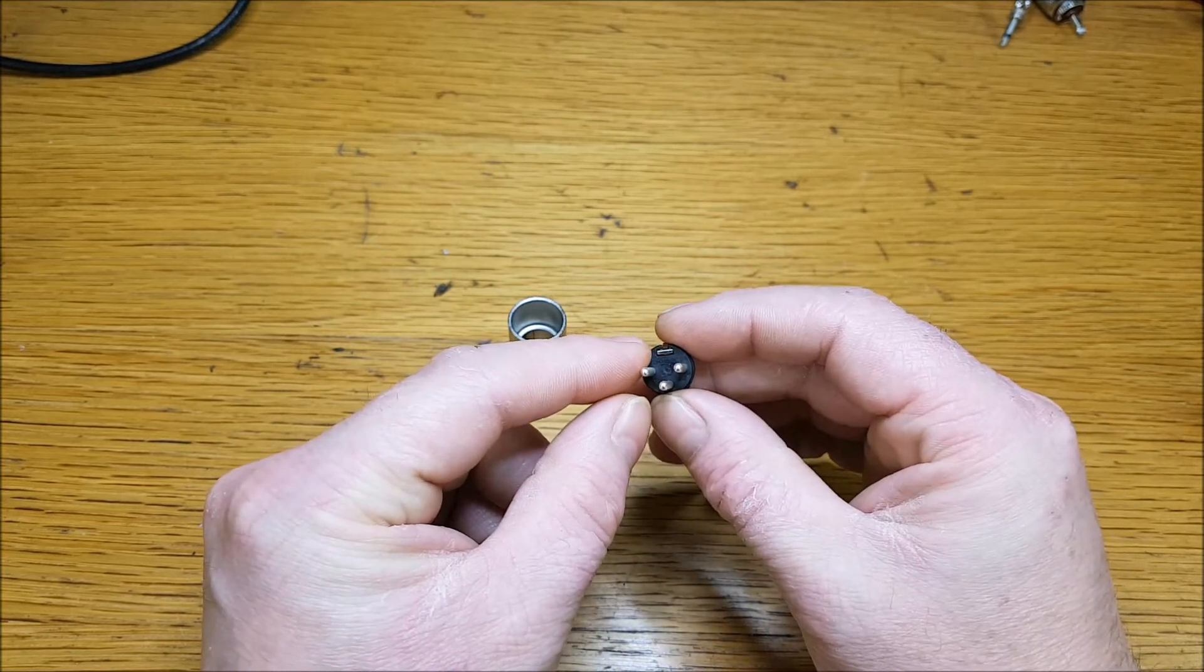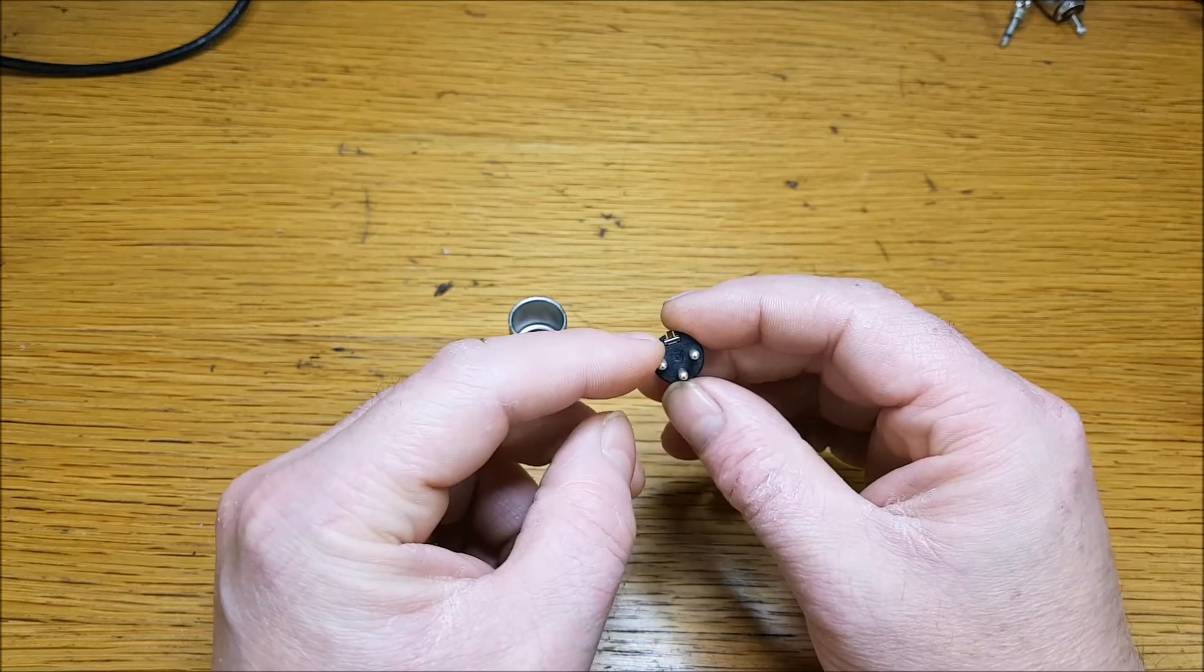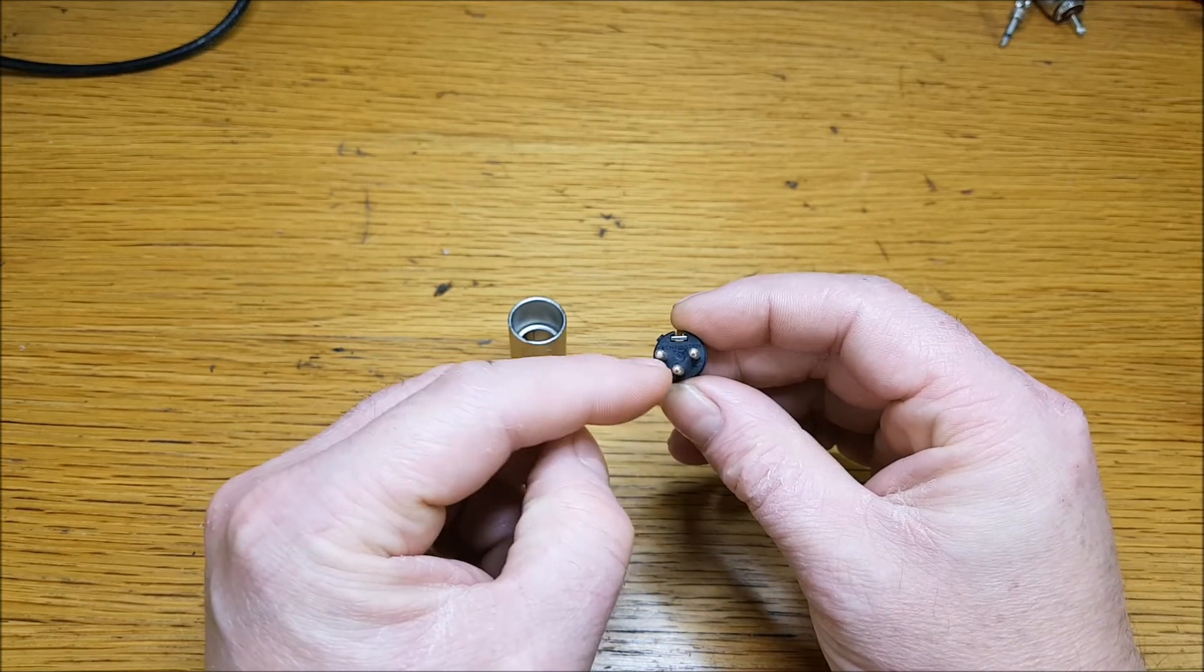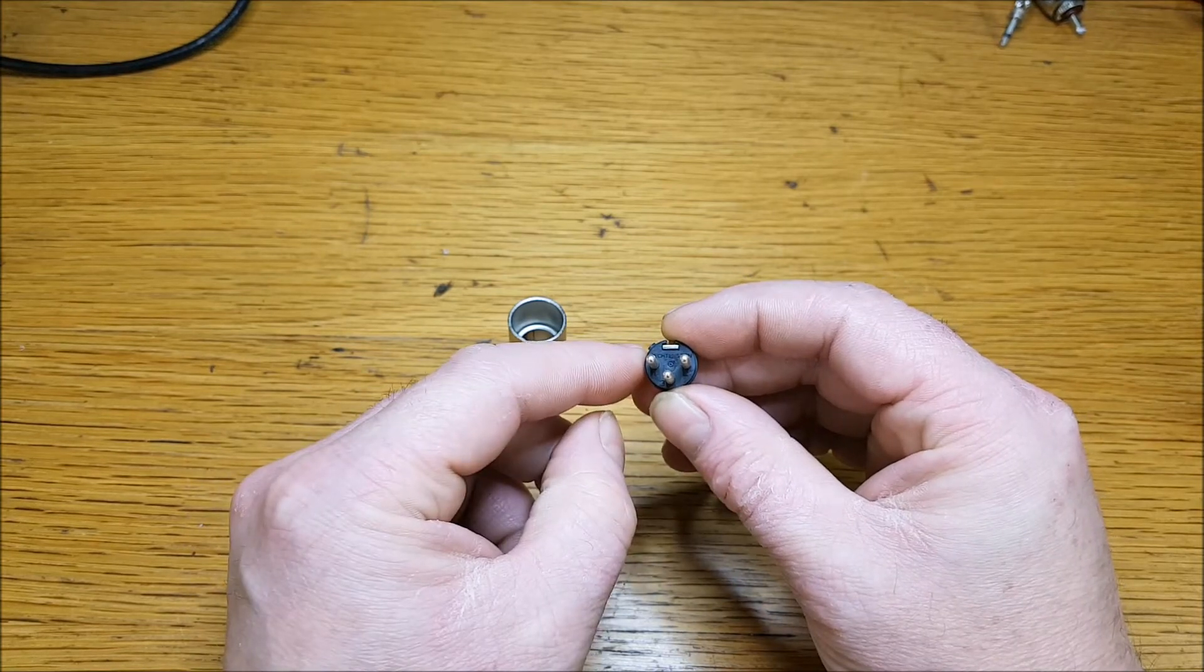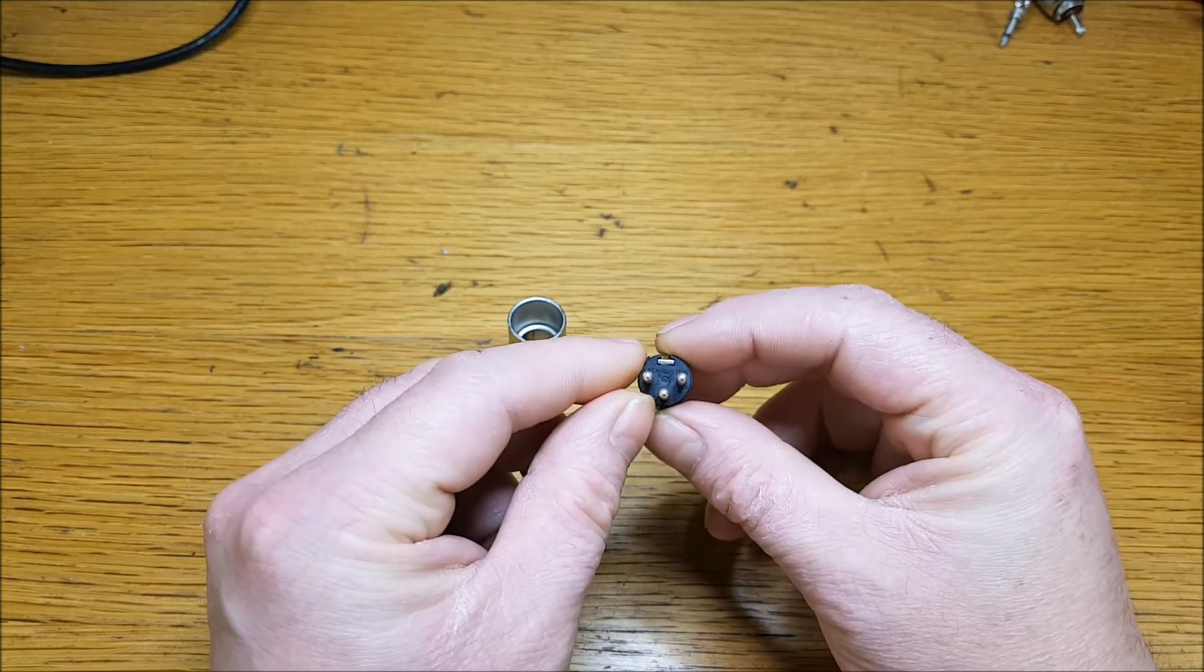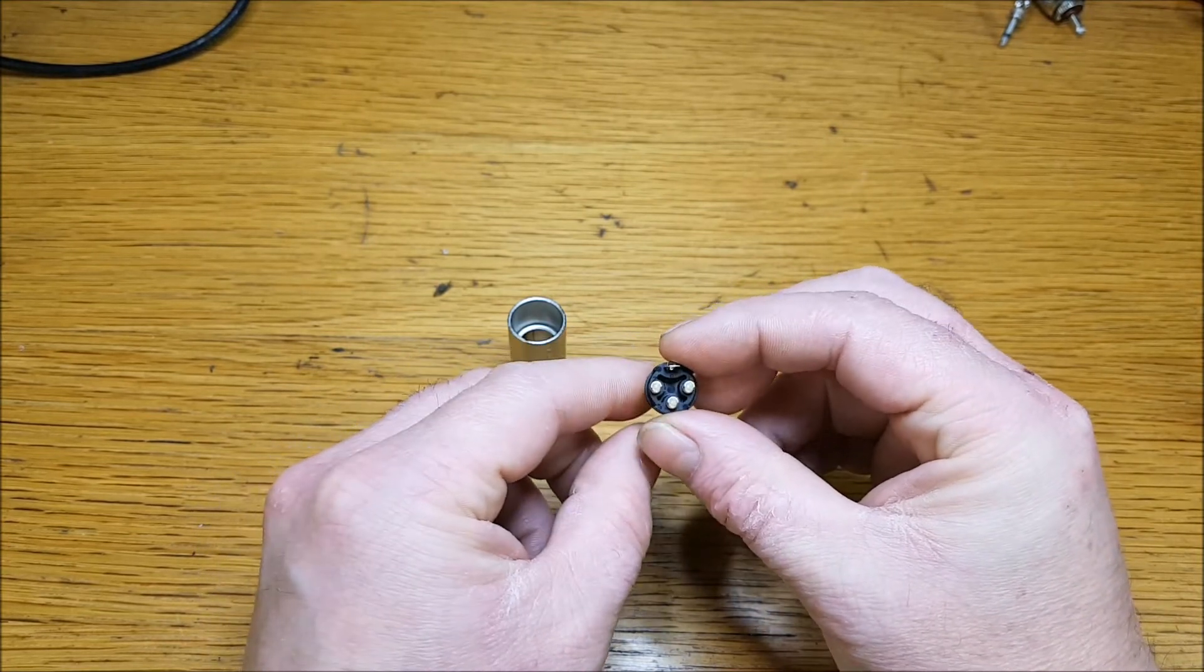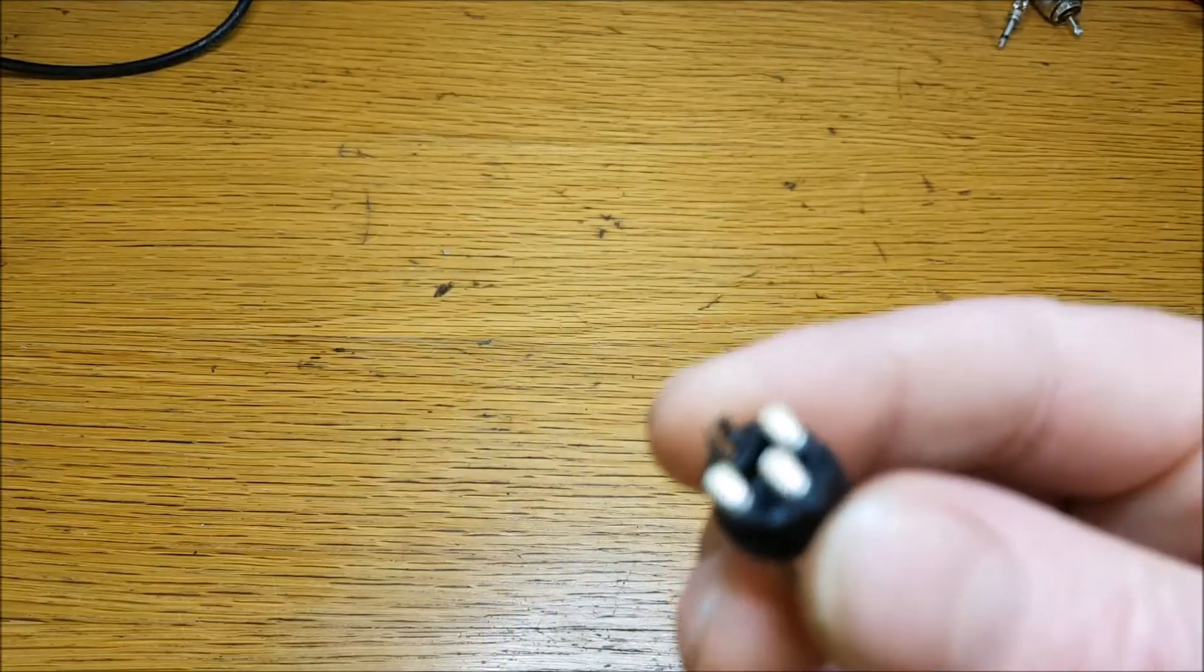If you were using one of these in an unbalanced application, you would link pins 1 and 3 together, which you're tying the audio minus to the ground, which unbalances it. Do that at the end where you require it to be unbalanced. So that's - you can see there you can solder on.